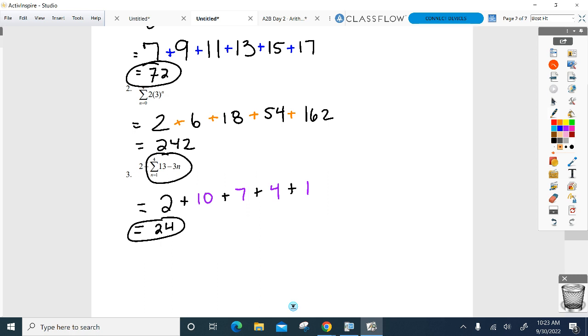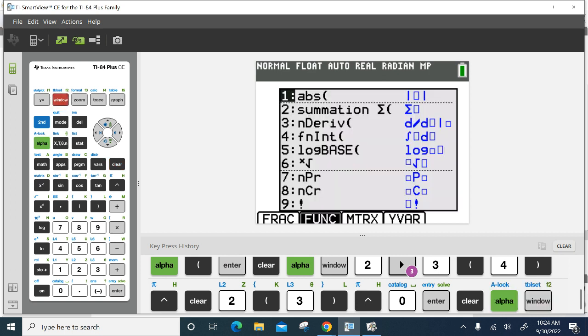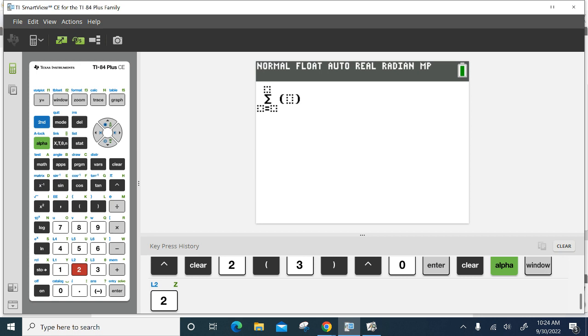Are you comfortable doing this by hand? Before I let you in on a secret. It is important that you know how to do it by hand. Grab your calculator. Can you go alpha window for me? See anything there? Your calculator has a sigma built into it. Alpha window number two. It'll do all this for you. It'll do all of it for you in one step.